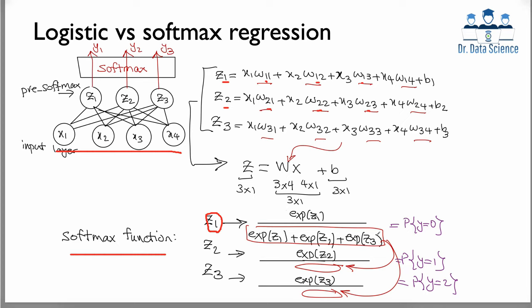Taking the exponential ensures all values are positive. If we call these probabilities for the three classes, the sum of probabilities equals e^{z1} plus e^{z2} plus e^{z3} divided by that same sum — which is exactly one. So we can add these three probabilities and get one. That's why we use the softmax function: we take the linear combination outputs, plug them into this equation, and get estimated probabilities that each sample belongs to each of the three classes.